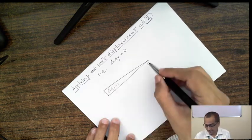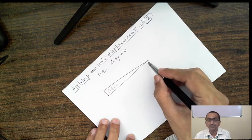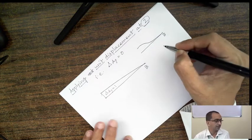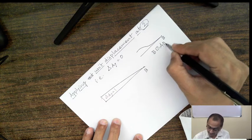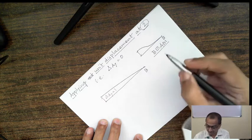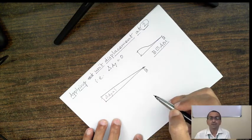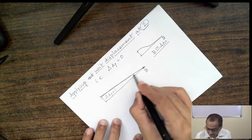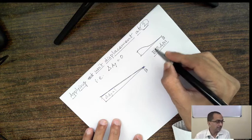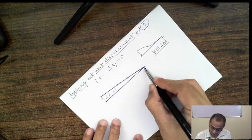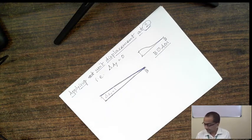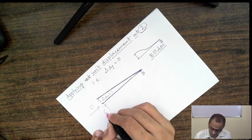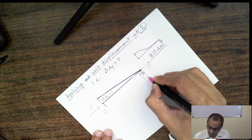Since the joints are hinge joints, when we displace an element of a truss, the angle between the members will change. In a beam element with a rigid joint B, the angle between members cannot change and the deflection shape is curved. But for the truss element, when we apply delta_ay, the deflected shape will be such that the angle between members changes. The forces required to bring this change are simply 0, 0, 0, 0, and 0.